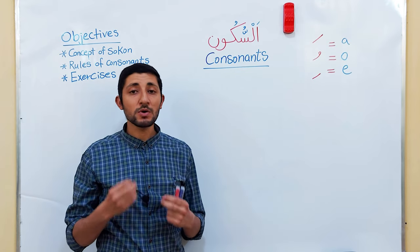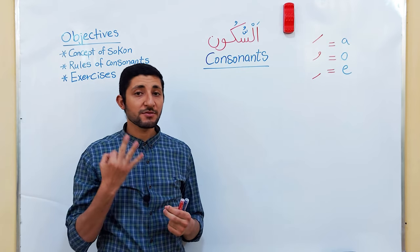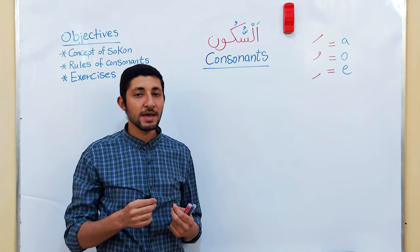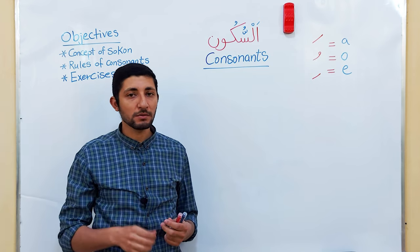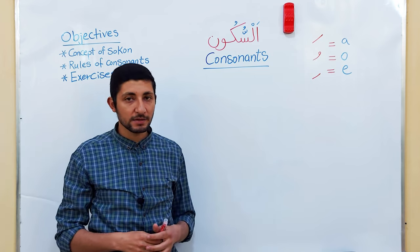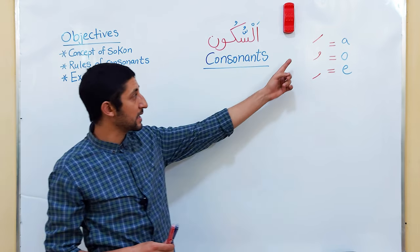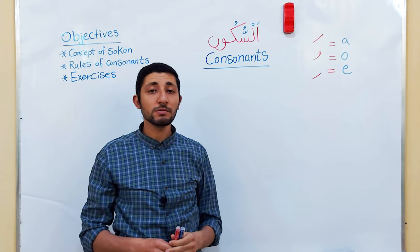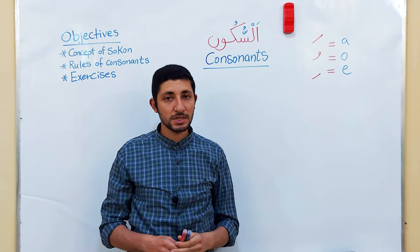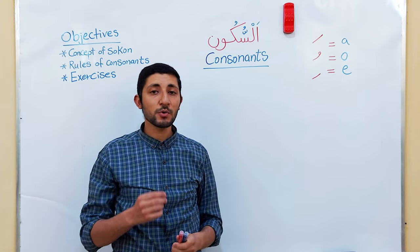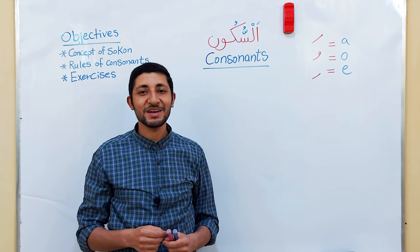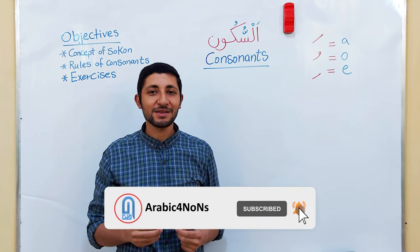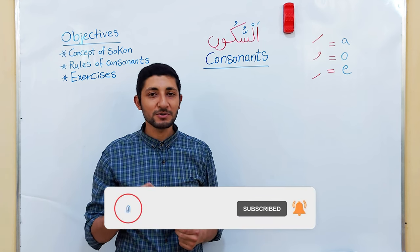In the previous lesson, we talked about the three diacritical labels in Arabic, or what we call Al-Harakat, and they are equivalent to short vowels in English. We said they are Fathah, Dammah, and Kasrah. Today we will introduce consonant sounds and talk about some important rules. Don't forget to subscribe to my channel and activate the bell to see videos on time.